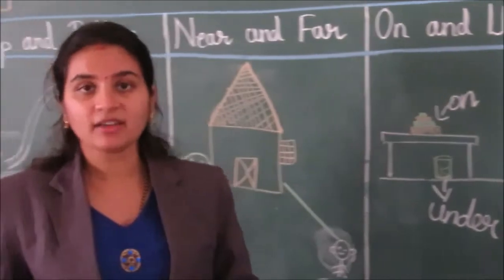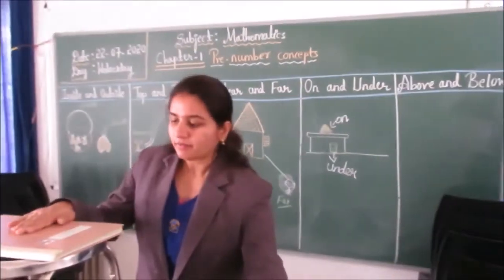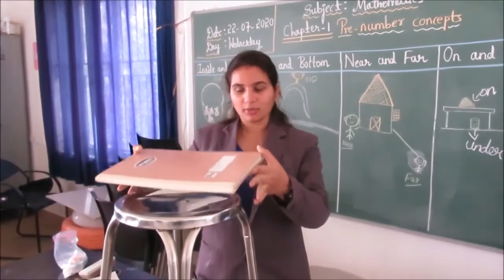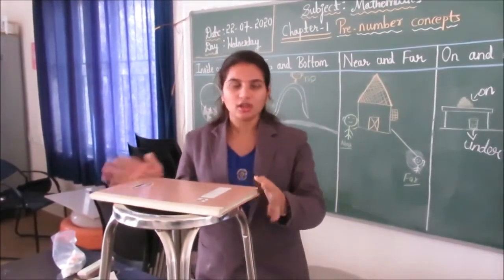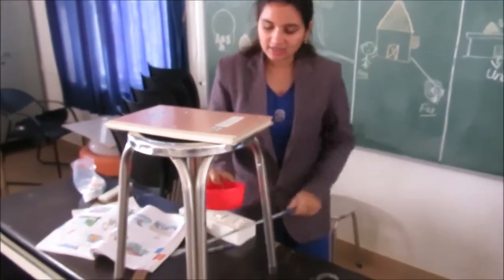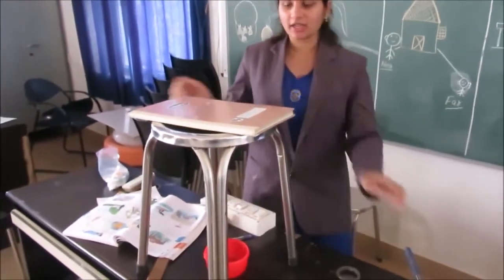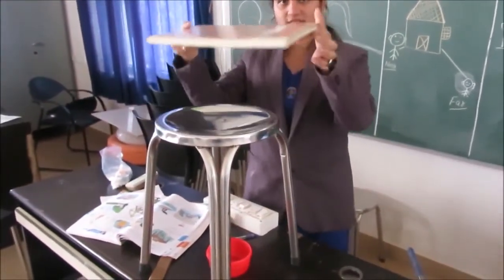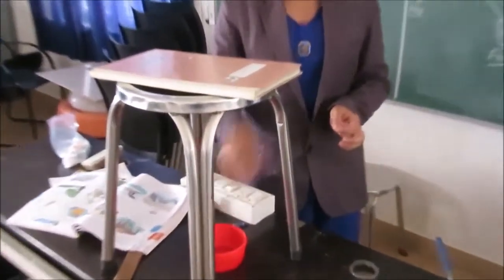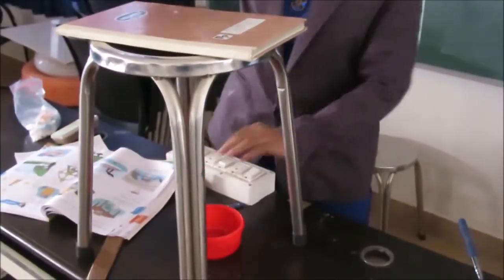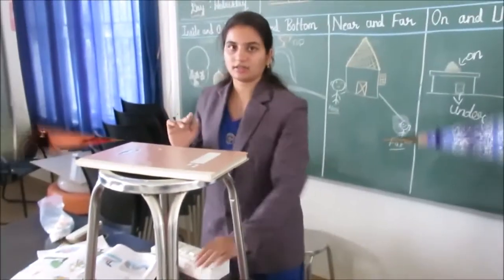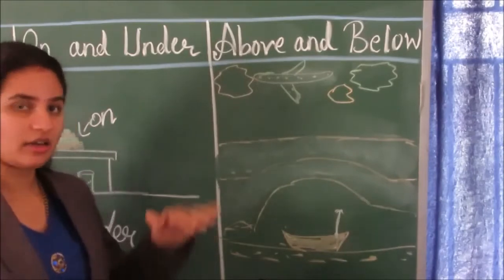Let us take another example. The book is on the table. The box is under the stool. The book is on the stool and the box is under the stool. On, under.